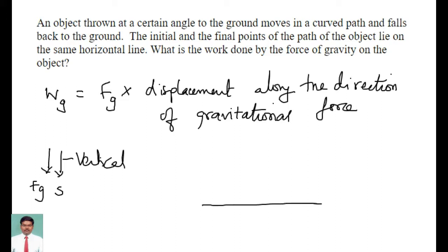So in this problem, an object is thrown at a certain angle, so it takes a parabolic path and fell down after some time. Now this is going to be called as the horizontal displacement.